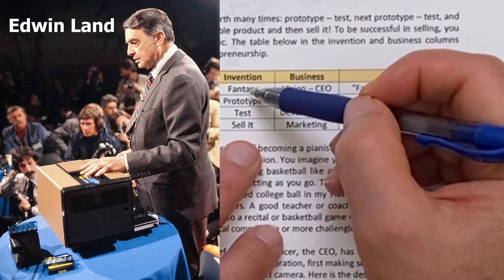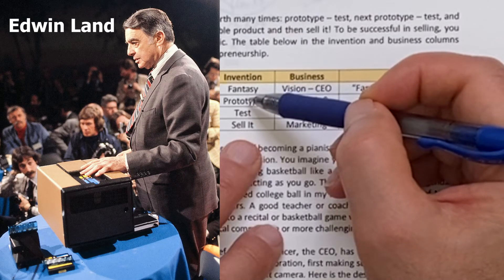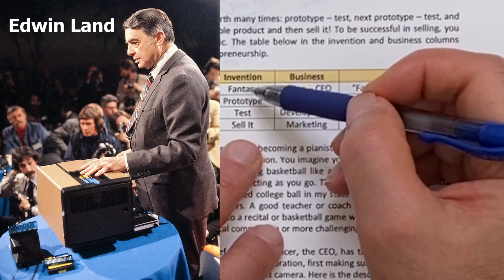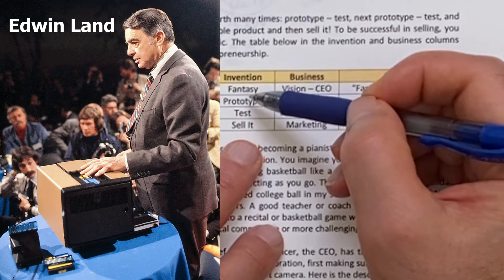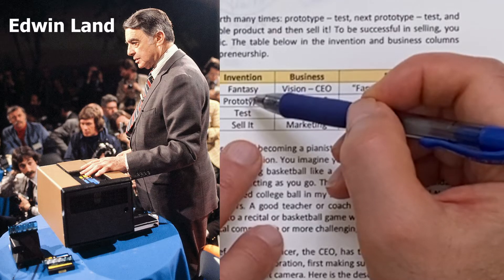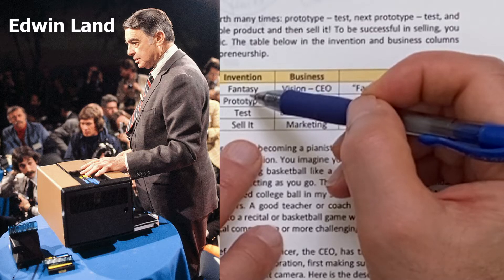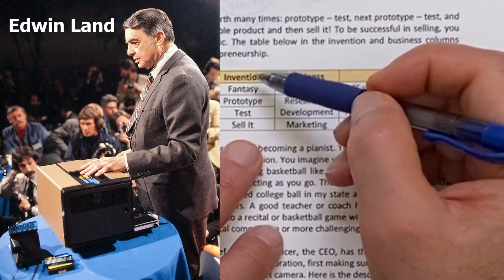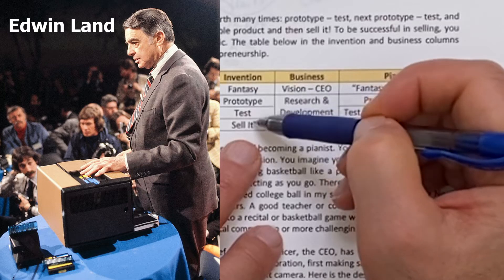There's a legend that when Edwin Land was taking a picture of his daughter Jenny in the early 1940s, she asked why she couldn't see the picture right away. In those days you sent the film off to Kodak to be developed. He invented the instant camera after a three-hour contemplative walk in Santa Fe, working out the general idea. It then took about three or four years to actually build the camera.